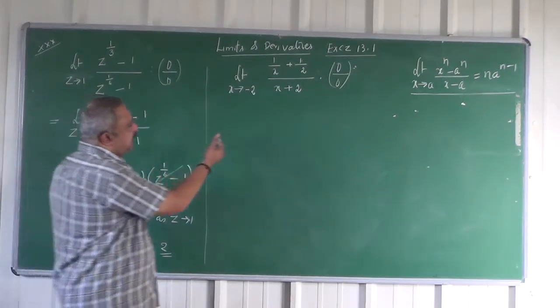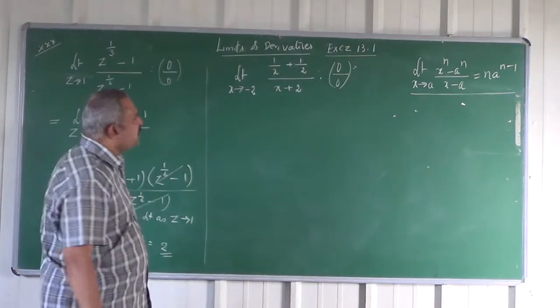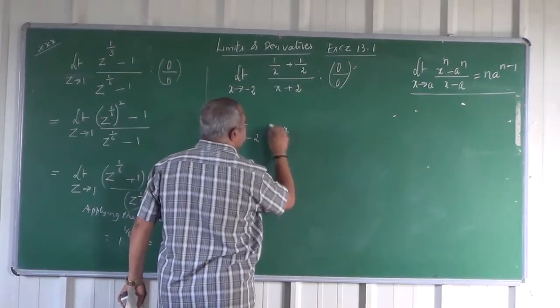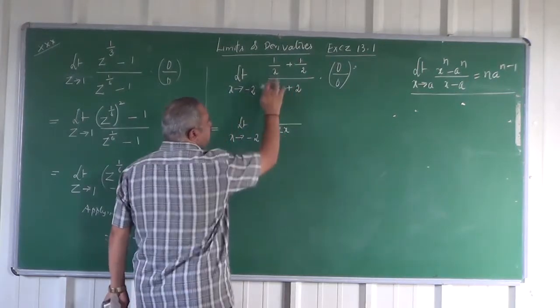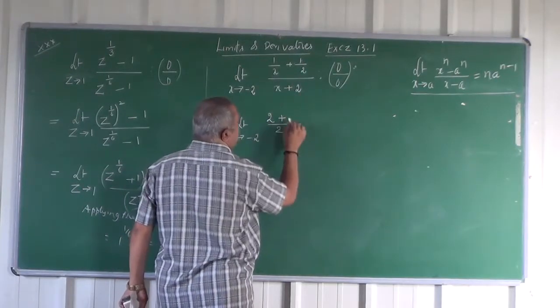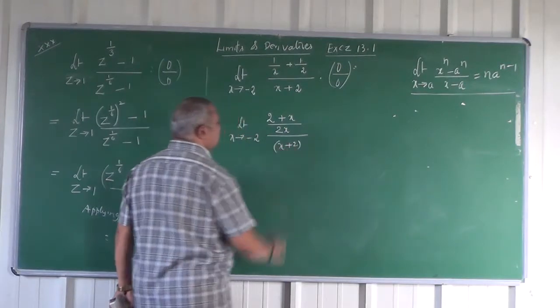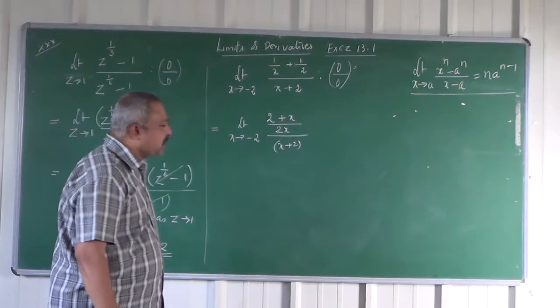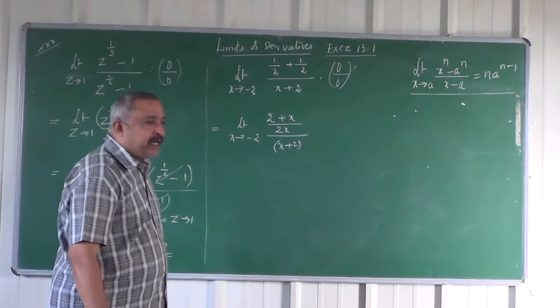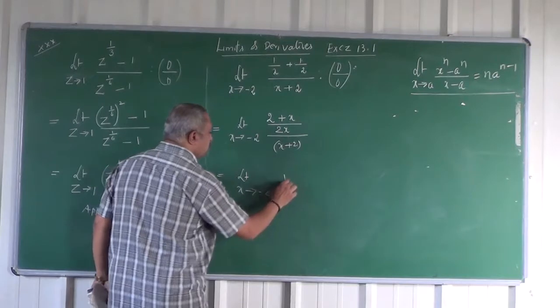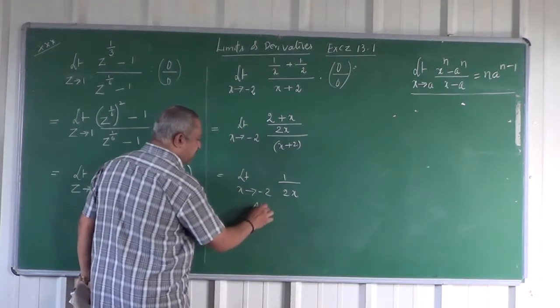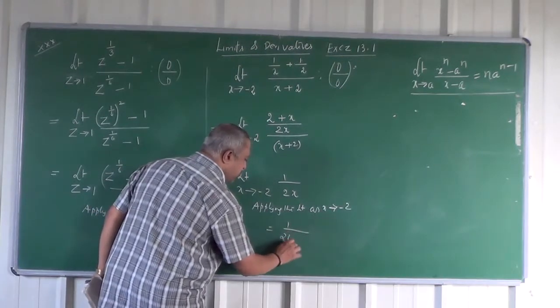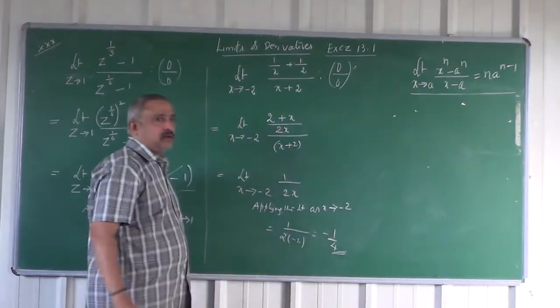As the problem itself suggests, it is better to simplify the numerator. You can add the fraction 1 by X plus 1 by 2. So this is limit X tending to minus 2. The LCM in the numerator - LCM between X and 2 is 2X. So 2 plus X divided by 2X. This is limit X tending to minus 2 of X plus 2 divided by 2X into X plus 2. Now X plus 2 cancels. You get 1 by 2X. Now apply the limit as X tends to minus 2. It is 1 by 2 into minus 2. It is minus 1 by 4.